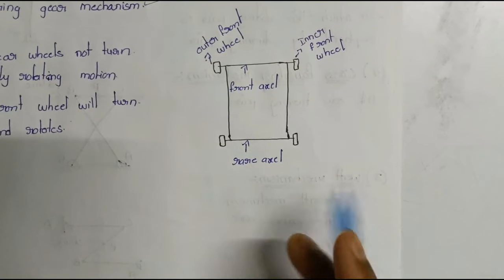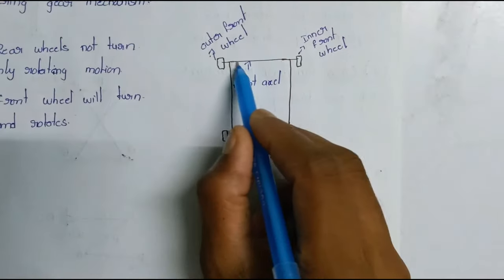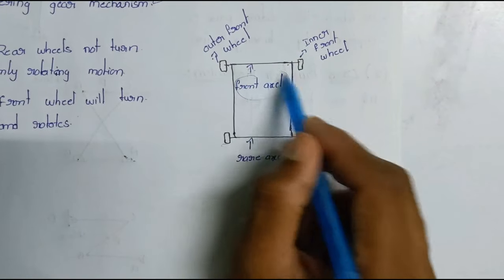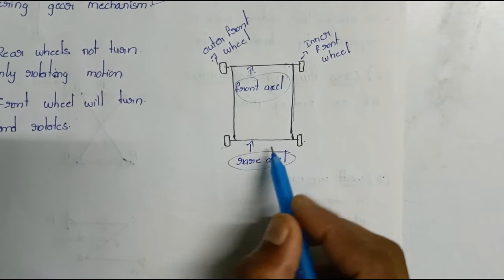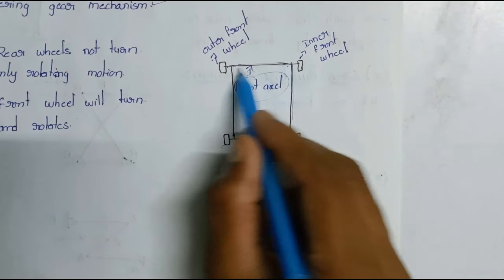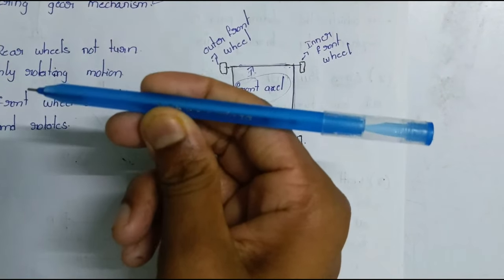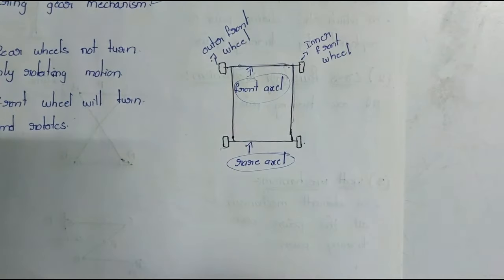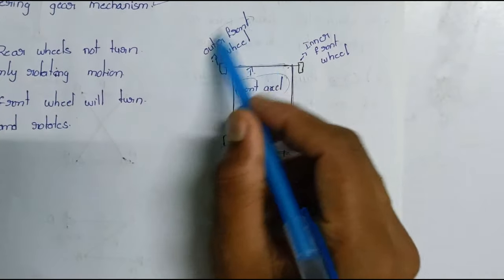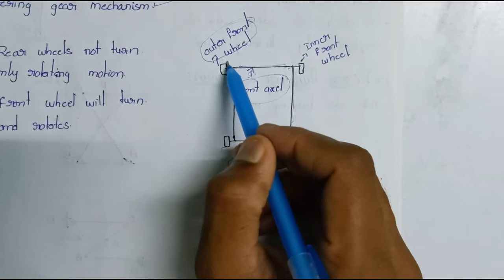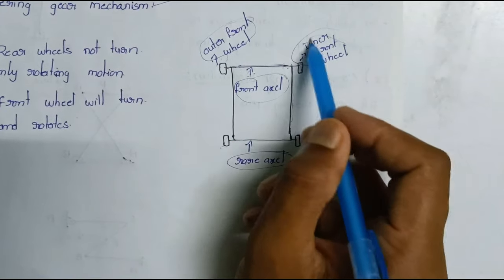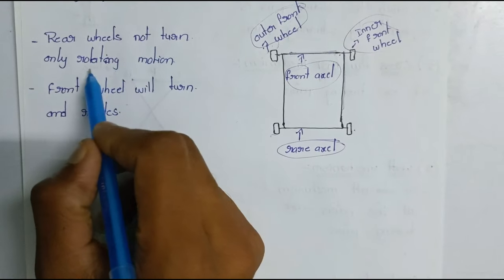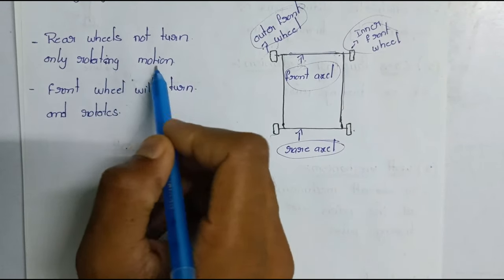Now, the wheels are divided into front axle and rear axle. Here you can see the front wheels. The rear wheels do not turn — only rotating motion.